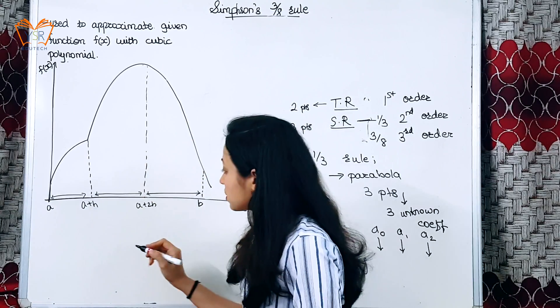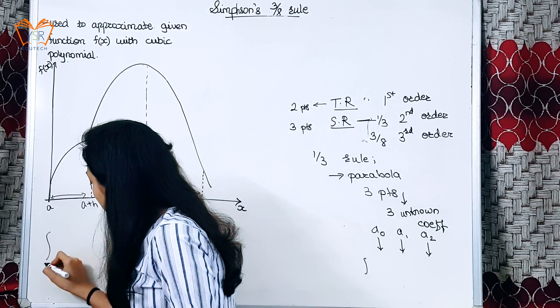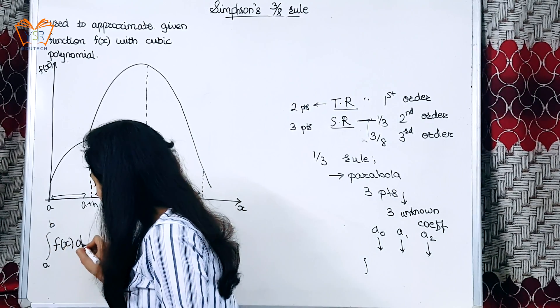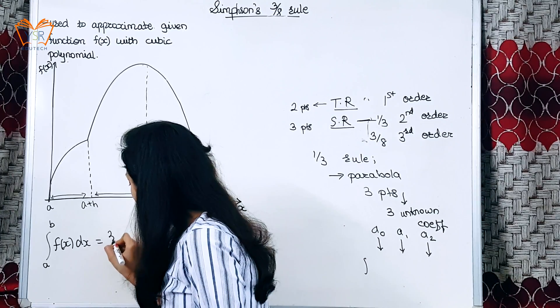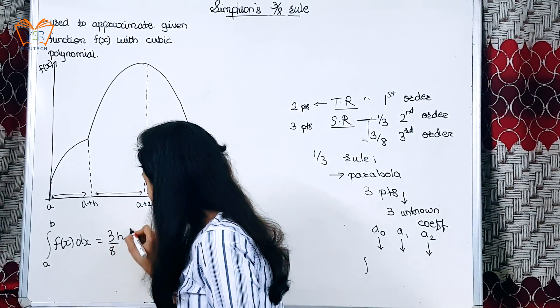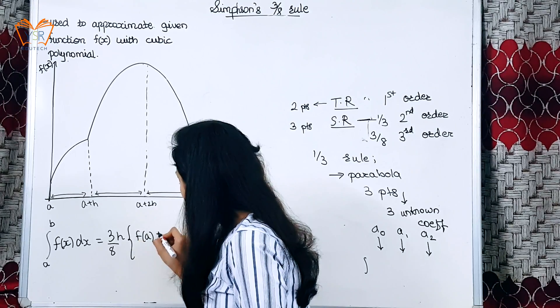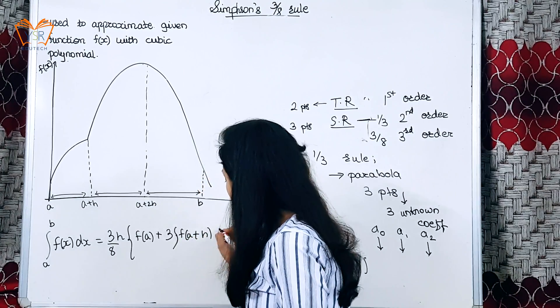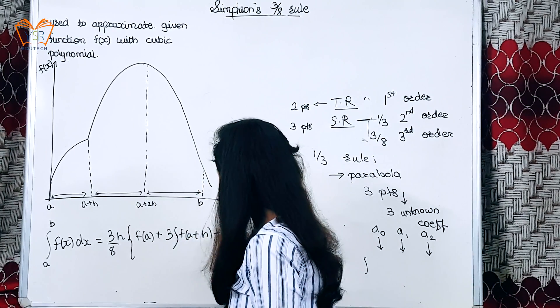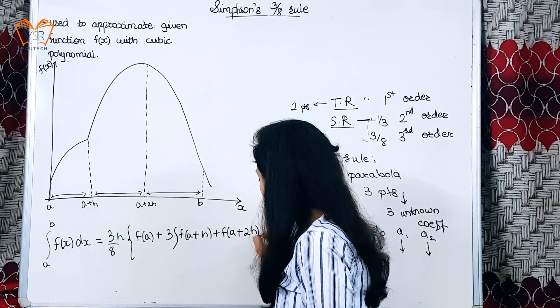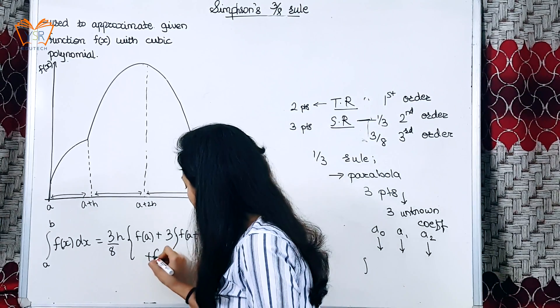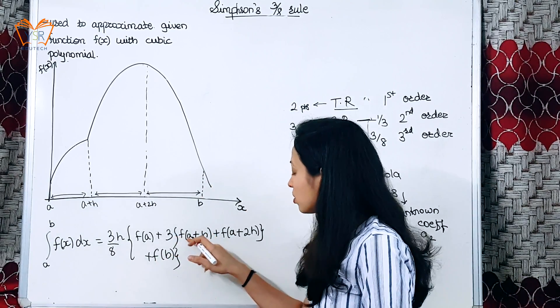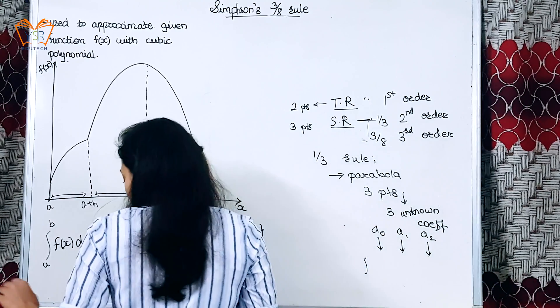Same steps will be applied for Simpson's three-eighth rule and the formula that will be obtained is: integration A to B, any function f(x) dx is equal to 3 by 8 H [f(a) + 3f(a+h) + 3f(a+2h) + f(b)]. 3 will be multiplied to f(a+h) and f(a+2h).